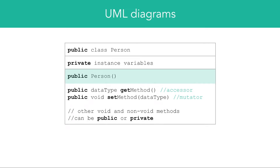It is best practice to write the constructor of a class as the first method. Remember, the purpose of constructors is to set the initial state of an object by initializing their instance variables. You can identify constructors easily as they have the same name as their class.